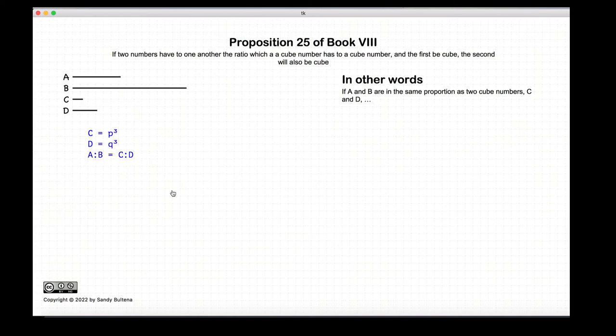This proposition states that if we have two numbers C and D which are both cube numbers, and if A is also a cube number, and the ratio of A to B is equal to the ratio of C to D, then B is also a cube.